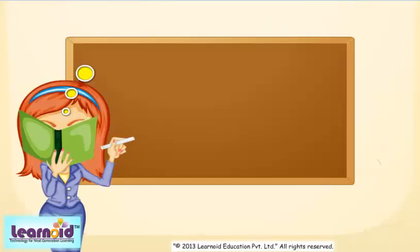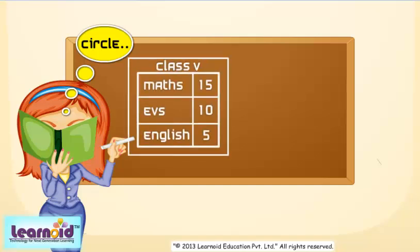We will now put the collected information in a table. Out of 30 students, 15 students like Maths, 10 students like EVS, and 5 students like English.